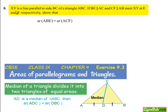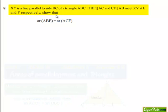Coming to the 8th question: XY is a line parallel to side BC of triangle ABC. If BE is parallel to AC and CF is parallel to AB, and they meet XY at E and F respectively, show that area of triangle ABE is equal to area of triangle ACF.